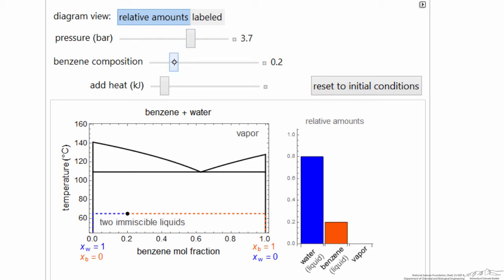I can change the composition, and you'll notice the relative amounts of the two liquids change as I change the composition. And then I can add heat. So as I add heat, we expect the temperature to increase.